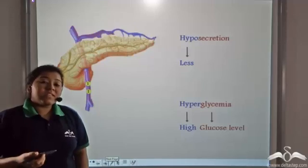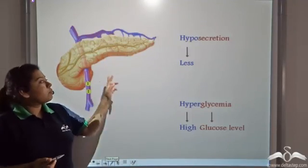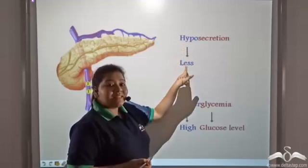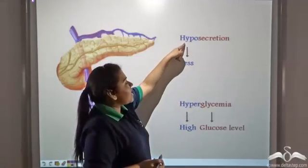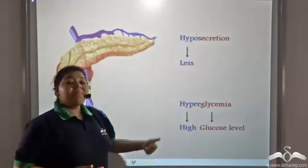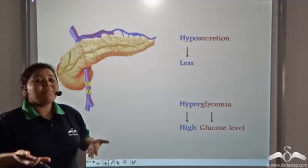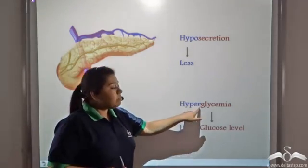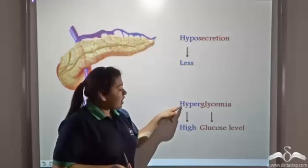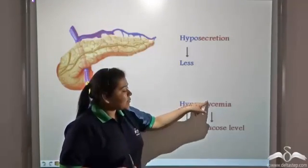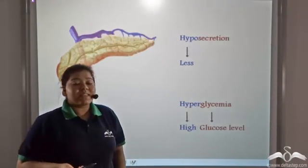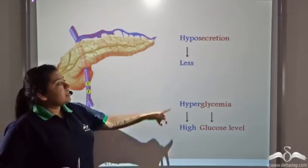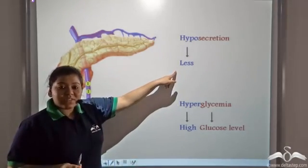Now, hyposecretion of insulin from the pancreas—by hyposecretion I mean less secretion because hypo means less—the blood glucose level will become high and this condition is known as hyperglycemia. Hyper means high and glycemia means the glucose level. So let me explain this to you once again. If there is less secretion of insulin,